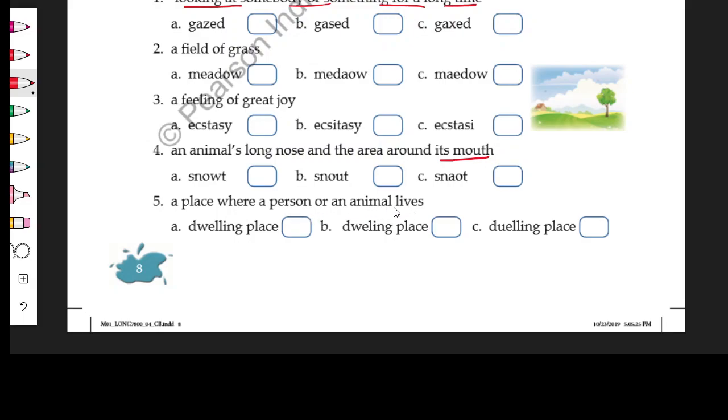A place where a person or an animal lives, that is called dwelling place. Now the correct spelling options you have to mark. If you have confusion over the word, you can just go through the chapter once again. Once or twice you look at the chapter, you will find these words are used in your chapter and from there you will get the correct spelling as well.